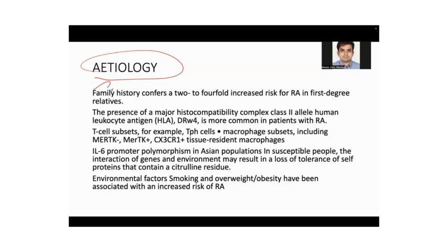Regarding etiology: family history increases the risk two to fourfold. The presence of HLA-DRw4 is very important and more common in patients with rheumatoid arthritis. Some T-cell subsets and IL-6 promoter polymorphism in Asian populations can increase the risk. Environmental factors like smoking and overweight or obesity are also associated with increased risk of rheumatoid arthritis.